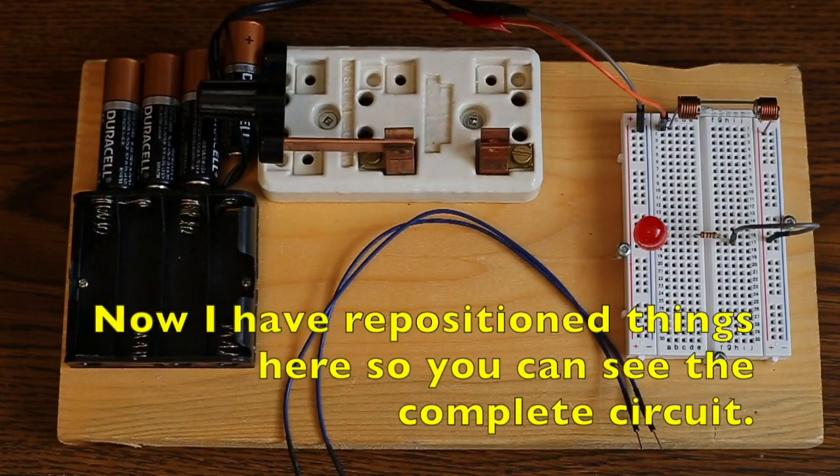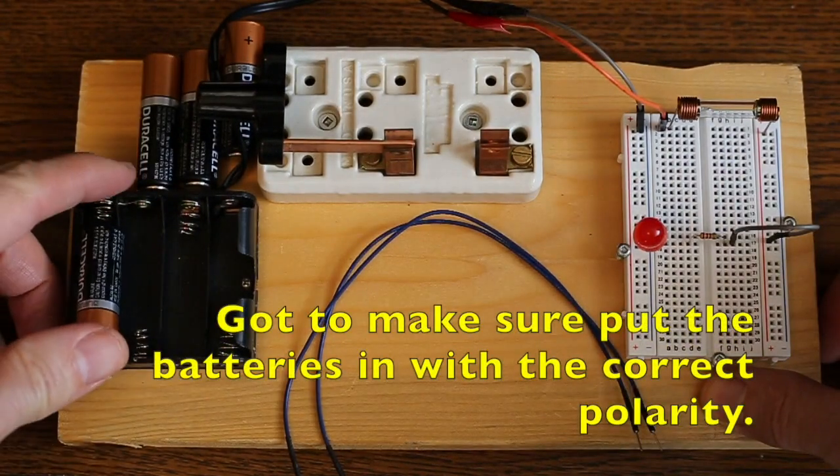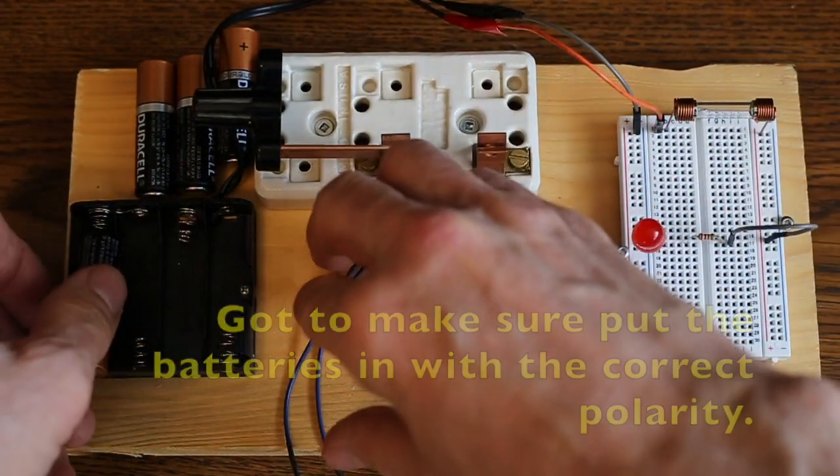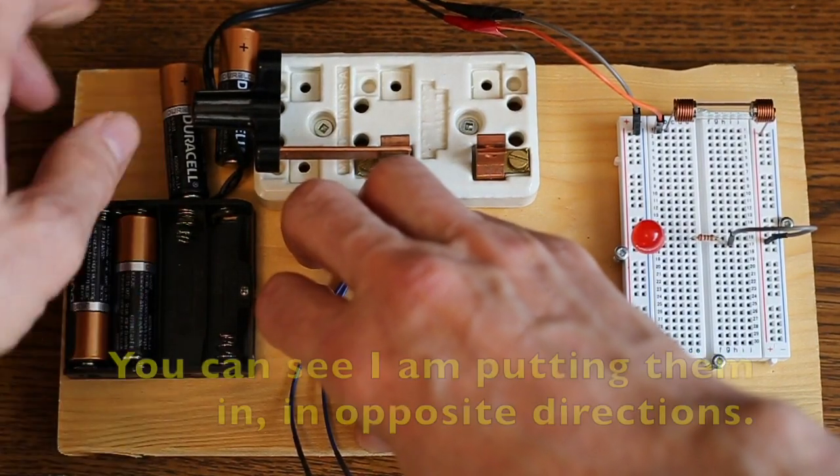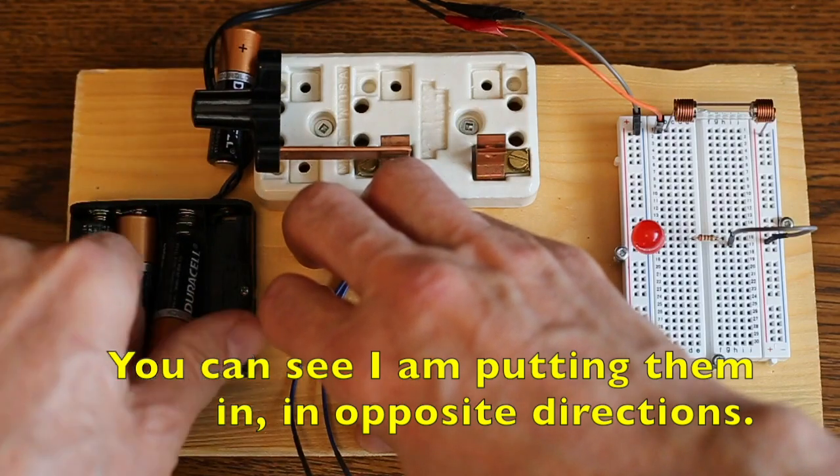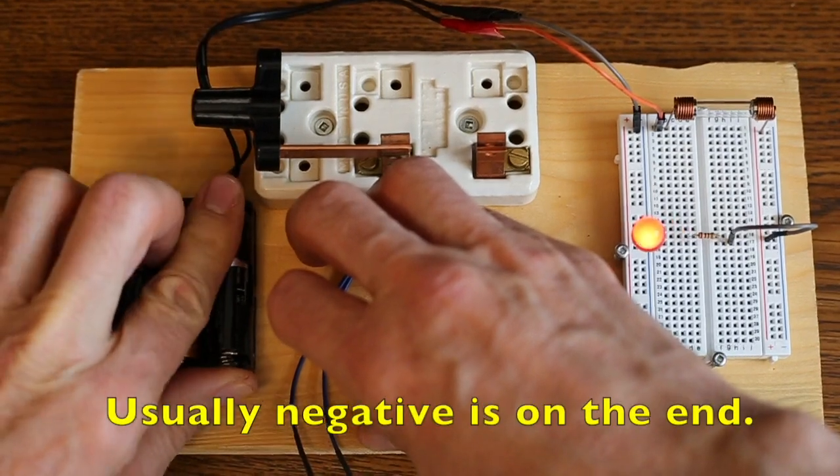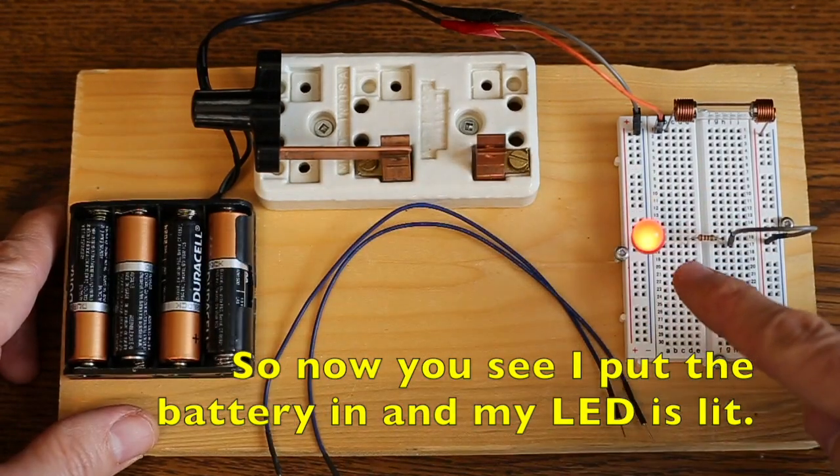Now I've repositioned things here, so you can see the complete circuit. And I'm going to hook up the batteries, and demonstrate how the current flows. I'm going to make sure to put the batteries in, in the correct polarity. Watch and see how the markings are. You can see, putting them in opposite direction, usually negative is on the end. So now you see, I've put the battery in, and my LED is lit.